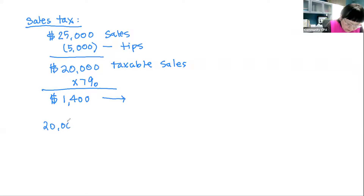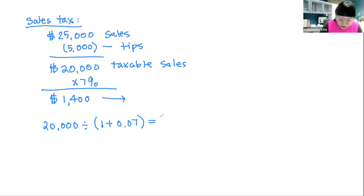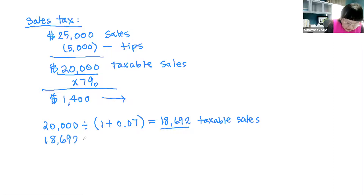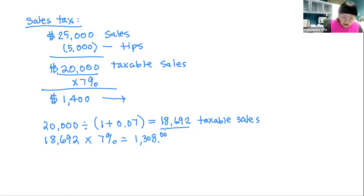The real calculation should be $20,000 divided by 1 plus 0.07. That gives you $18,692 in taxable sales — a different number. You use that $18,692 times 7%, and your sales tax is $1,308. How many of you are paying the wrong amount instead? A lot of business people do.